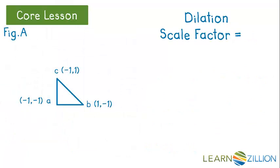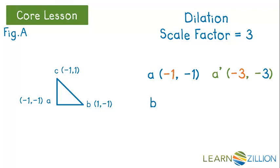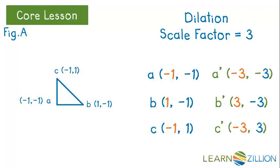Let's look at another example, this time with a scale factor of 3. We need to multiply each of these points by 3. A is (−1, −1), so multiplying by 3, A prime is (−3, −3). B is (1, −1), so multiplying both by 3, B prime is (3, −3). C is (−1, 1), so multiplying both by 3, C prime is (−3, 3).